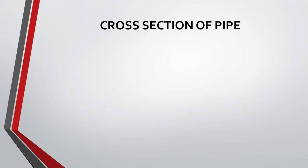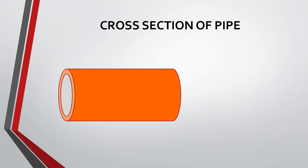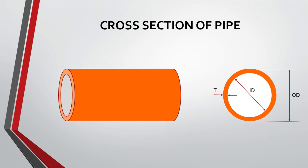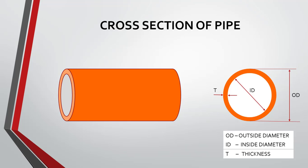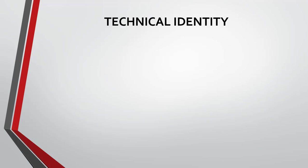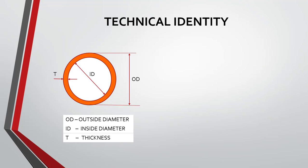The first thing we should know is the cross section of pipes. As mentioned, pipes are a cylindrical body with a hollow cross section. Any object with a cylindrical body and a hollow cross section has three important elements: OD, which is the outside diameter; ID, which is the inside diameter; and thickness. However, pipes are generally referred to with respect to one element, which is the outside diameter of the pipe.